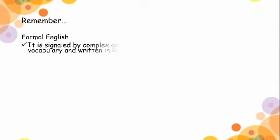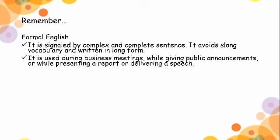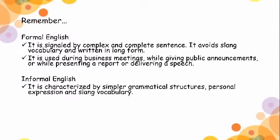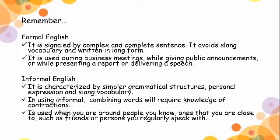Always remember that formal English is signaled by complex and complete sentences. It avoids slang vocabulary and is written in long form. Formal English is used during business meetings, while giving public announcements, or while presenting a report or delivering a speech. Informal English is characterized by simpler grammatical structures, personal expression, and slang vocabulary. In informal English, combining words requires knowledge of contractions, and it is used when you are around people you know — ones that you are close to, such as friends or people you regularly speak with.